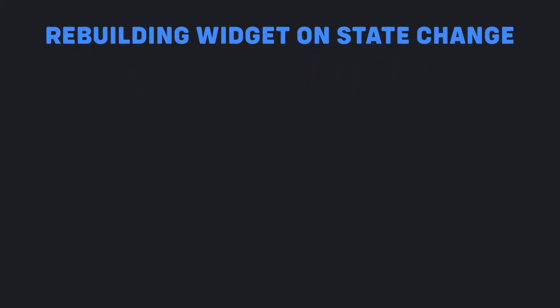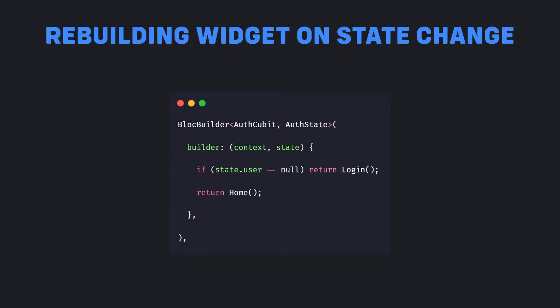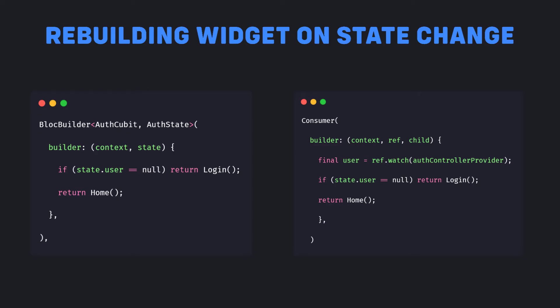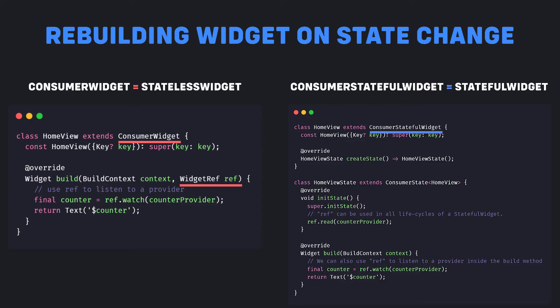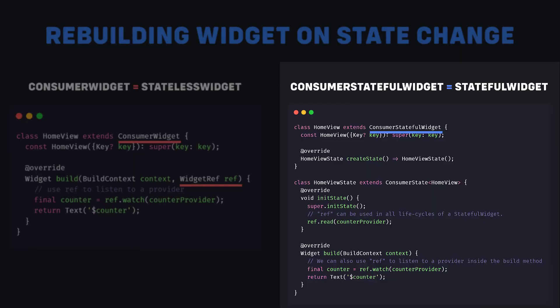In the rebuilding widget on state change scenario, Bloc uses the BlocBuilder widget to react to state changes. BlocBuilder goes through the widget tree looking for the closest Bloc of a certain type and subscribes to its state changes. RiverPod uses the Consumer widget to do the same. Since we don't have our StateNotifier in the tree, we cannot declare the type as with Bloc, but we do have our container of providers and Consumer widget gives the container reference. Here we are explicitly subscribing to the AuthController provider. The biggest difference is that RiverPod provides an ability to use Consumer on a user-written widget level — you can use ConsumerWidget instead of StatelessWidget and ConsumerStatefulWidget instead of StatefulWidget.